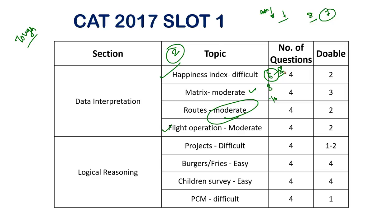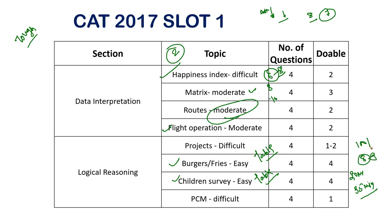In the Logical Reasoning section of 2017 Slot 1, the burgers and children survey questions required making a table — these two sets were manageable. So here the 8 questions were manageable. If you gave 30-35 minutes here, you could have 8 questions with about 100% accuracy, and that would have placed you at 80 percentile on the spot.